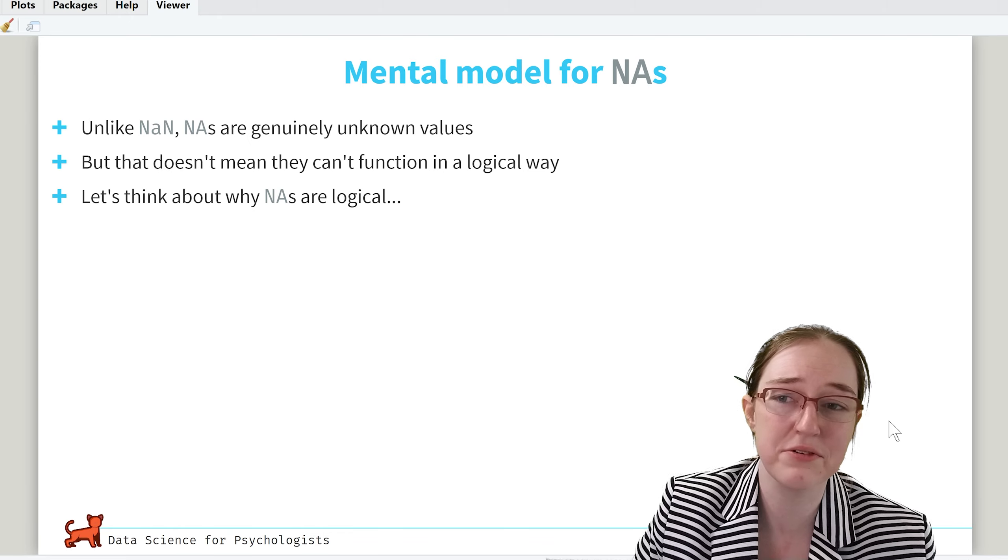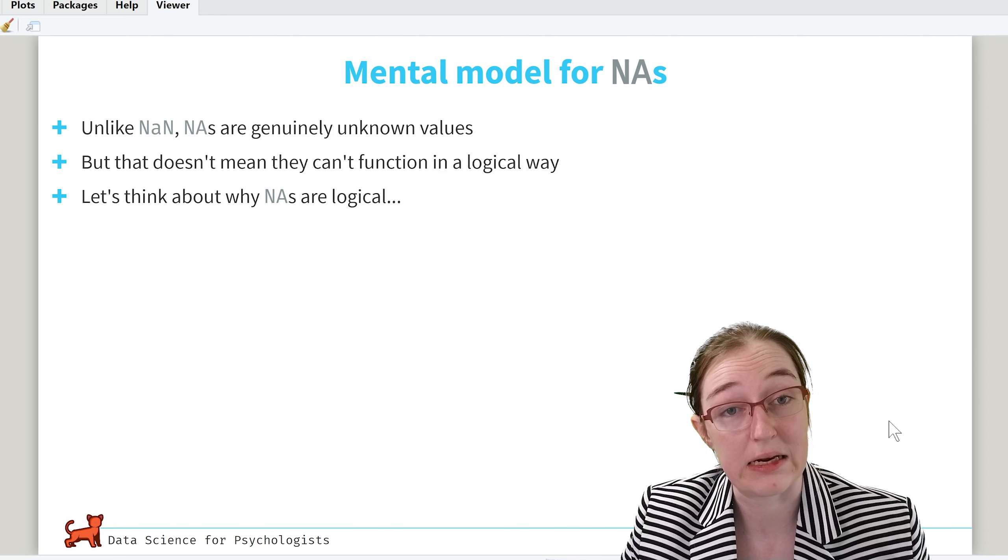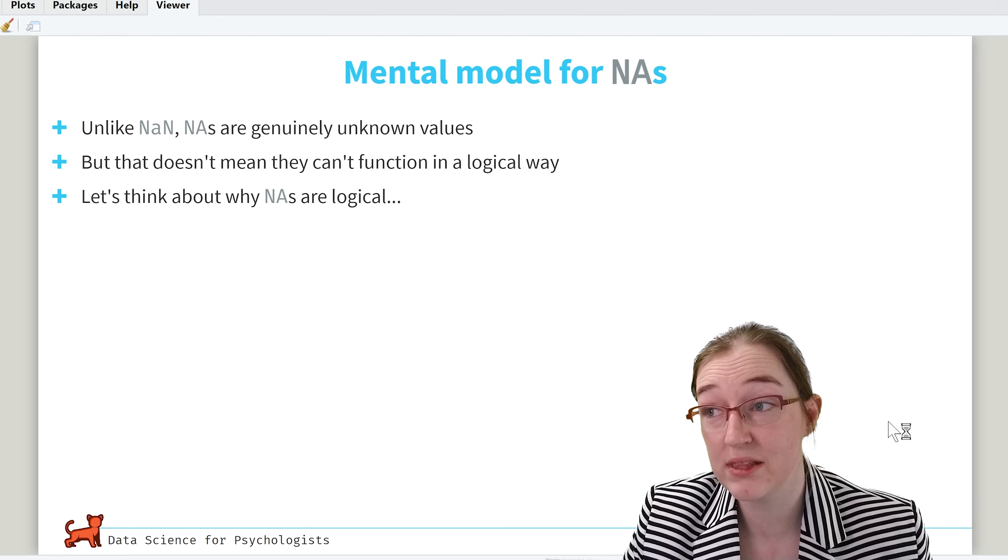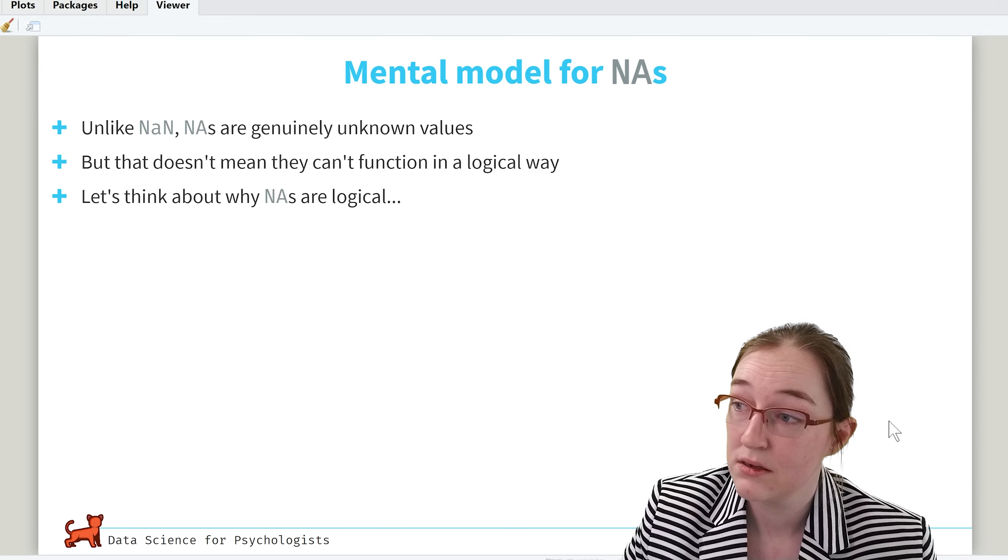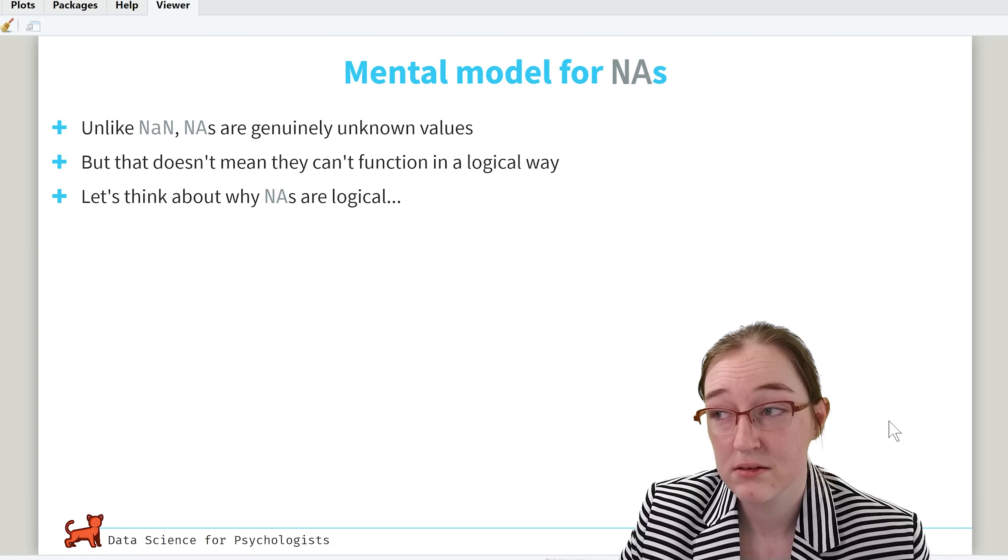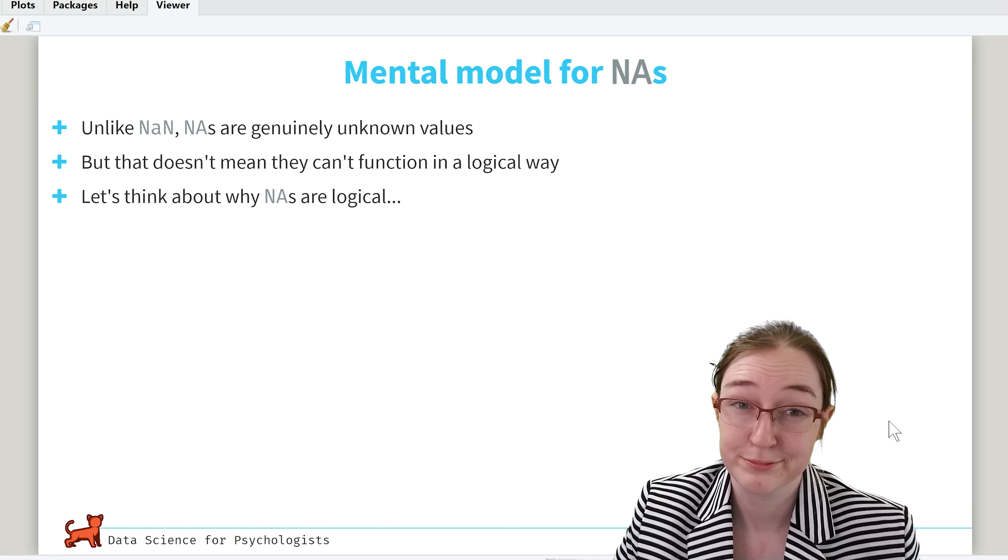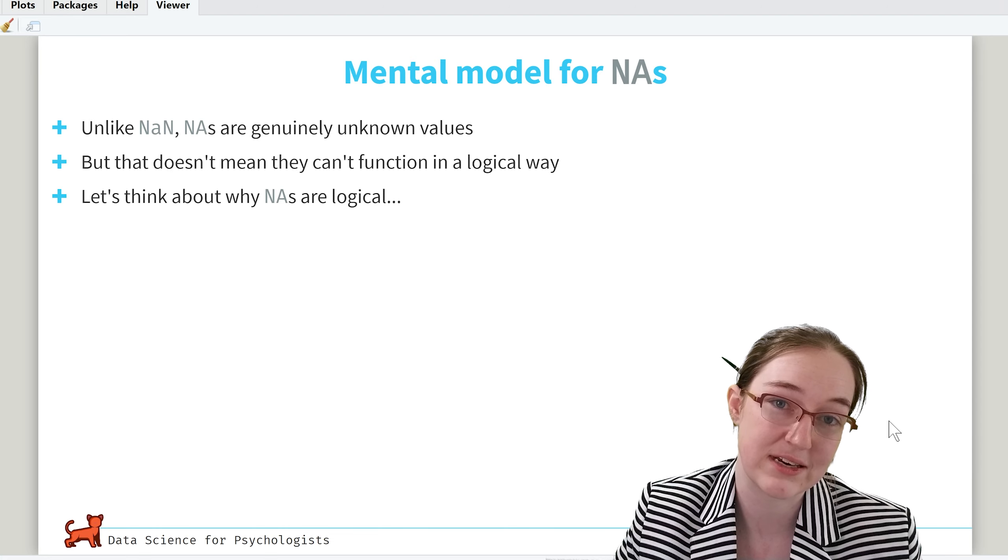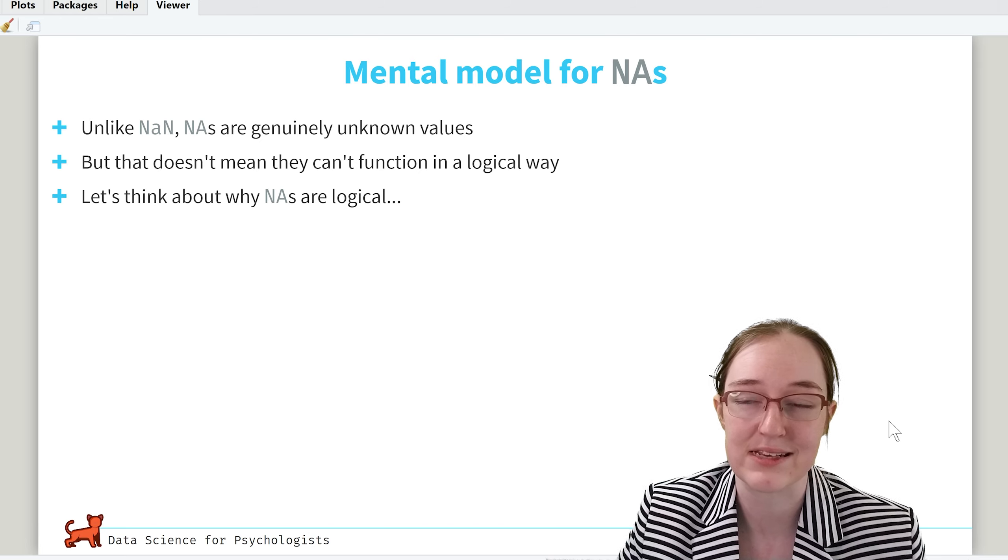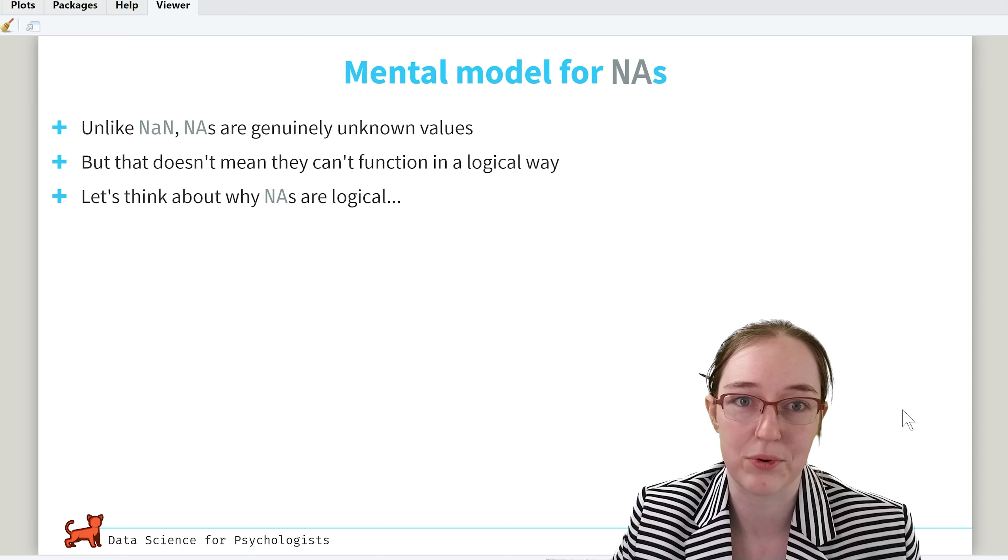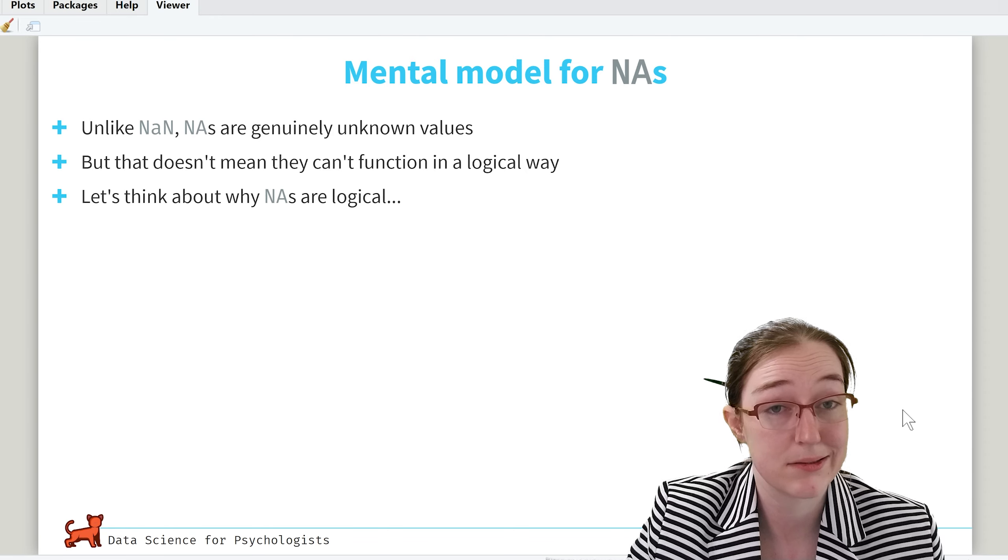So here's how you can kind of think about NA, it's just a basic mental model. Unlike NaN, NAs are genuinely unknown values. That doesn't mean that they can't function in a logical way. But they are essentially just like question marks. And in SPSS, you usually have these as 999, which is not a great way to do it. Because at least here, you can't accidentally take an average with four numbers and practically a thousand.